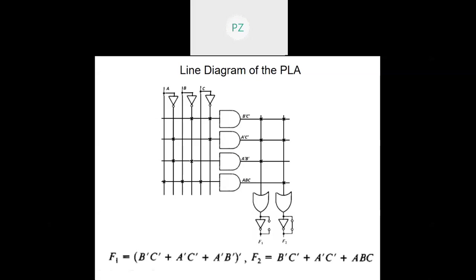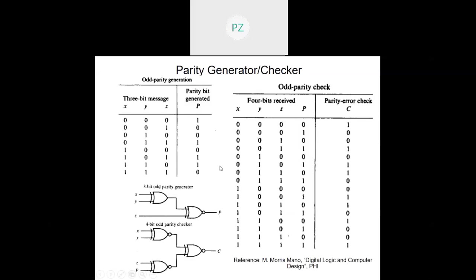F2 is having b-dash c-dash plus a-dash c-dash plus abc, and the fuse is intact so that the inverter is bypassed. In a VLSI chip we will have to put the connectivity in place anyway. That pretty much completes the discussion about PLA.